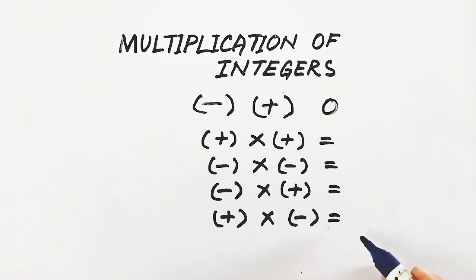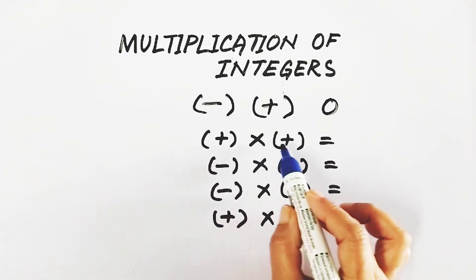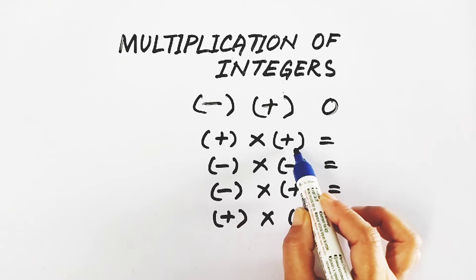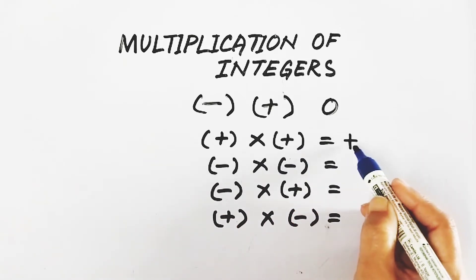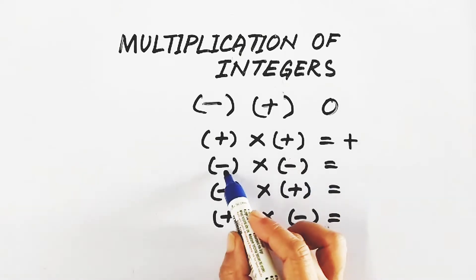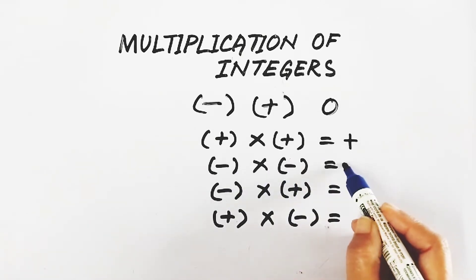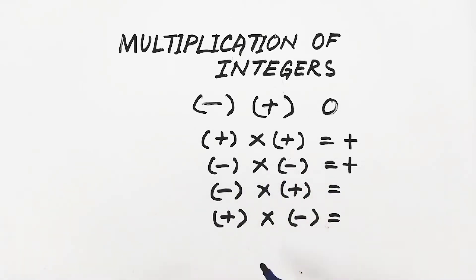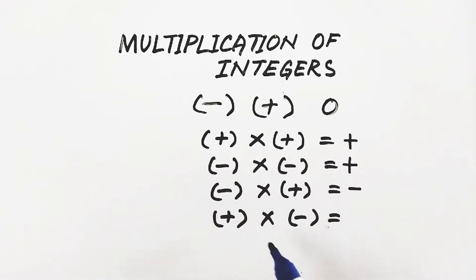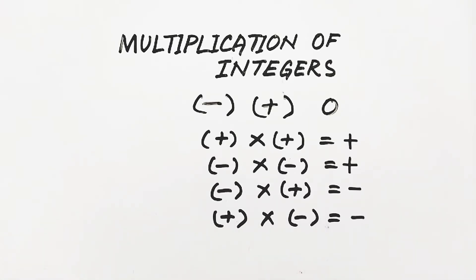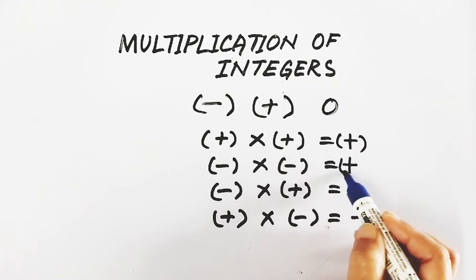So what should be the sign of this product? When we are finding the product of two positive integers, the sign of the product must be positive. When we are multiplying two negative integers, it will also be positive. When there is one negative and another positive, or positive and negative, it must be negative. These are the sign rules for the product.